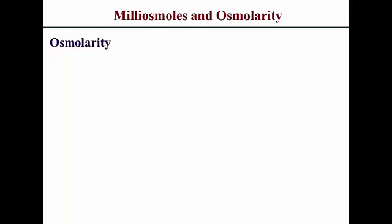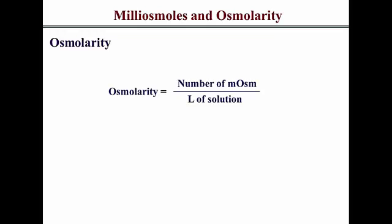The equation for milliosmoles can also be expressed by breaking down millimoles into the ratio of quantity in milligrams divided by the molecular weight. Osmolarity is basically a concentration — it is the amount of milliosmoles in a liter of solution. So osmolarity is milliosmoles per liter of solution, and that's the main difference between milliosmoles and osmolarity.